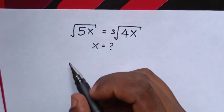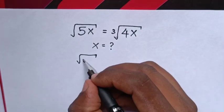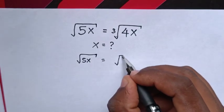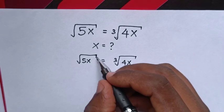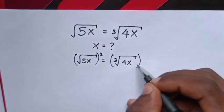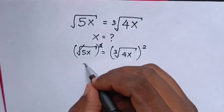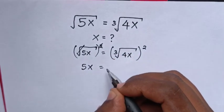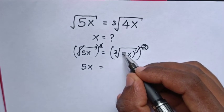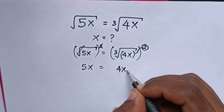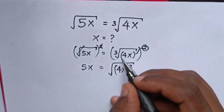To cancel this square root, we will multiply by square in both sides. So it will be 5x square root is equals to cube root of 4x. Then we multiply square in both sides. This square will cancel with square root, so it will be 5x is equals to 4x bracket square, then all under cube root.